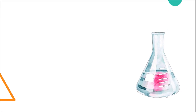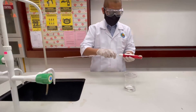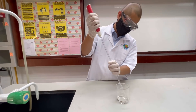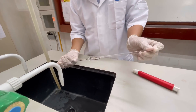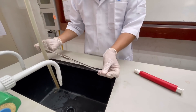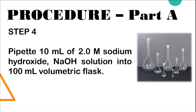Part A, Step 3: rinse the 10 ml pipette with 2.0 molar sodium hydroxide solution. Step 4: pipette 10 ml of 2.0 molar sodium hydroxide solution into a 100 ml volumetric flask.